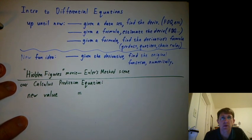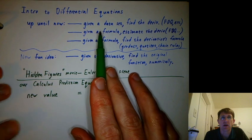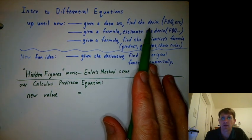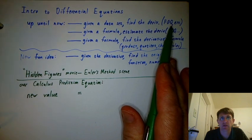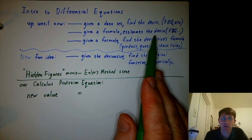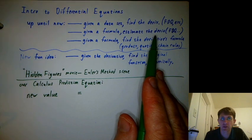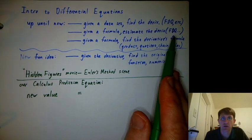Up until now, we've been playing the game of: given a data set, find the derivative point by point using forward difference quotient, backward difference quotient, central difference quotient. Or, given a formula, estimate the derivative. That's what we did when we were first learning about derivatives.